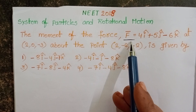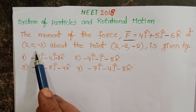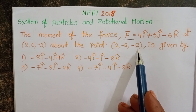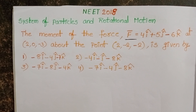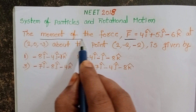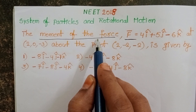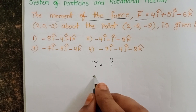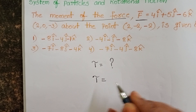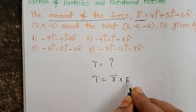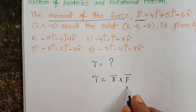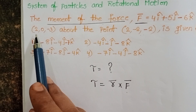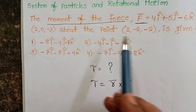The moment of force F̄ at (2, 0, -3) about the point (2, -2, -2) is given by. In this question we have to find out the moment of force. Moment of force is nothing but torque. So here we have to find out the torque. The formula of torque in vector representation is R̄ cross F̄, where R̄ is the position vector and F̄ is the force vector. We have to find out the moment of force at this point about this point.